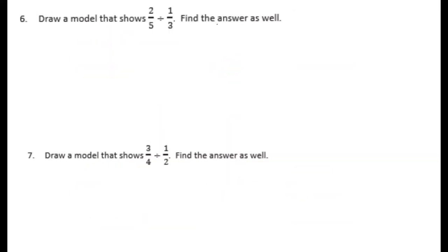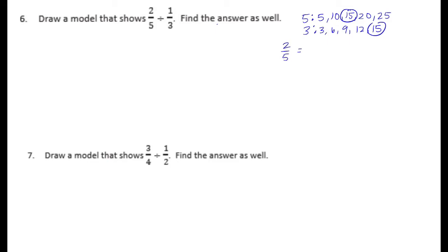Number 6: draw a model that shows 2 fifths divided by 1 third. Find the answer as well. First I'm going to find a common denominator for 2 fifths and 1 third. I'll list the multiples of 5 and 3: 5, 10, 15 and 3, 6, 9, 12, 15. So the common denominator is 15. 2 fifths times 3 over 3 gives 6 fifteenths, and 1 third times 5 over 5 gives 5 fifteenths. So we have 6 fifteenths divided by 5 fifteenths, and now I can draw my model.